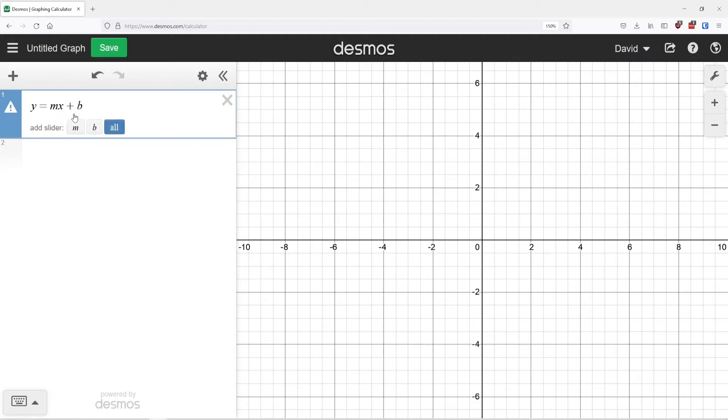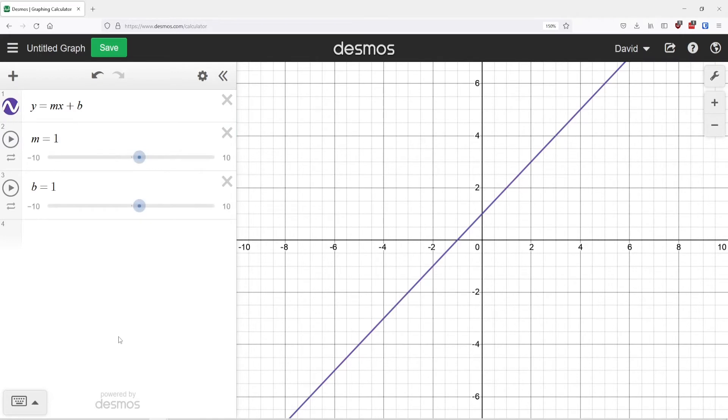If you notice what this is doing is it's saying, hey, do you want to add a slider for m and b? Because I don't know what they are. The only variables that Desmos knows about by default are x and y. Any other letter is treated as an unknown variable that you have to define. So we're going to add sliders for both of these.